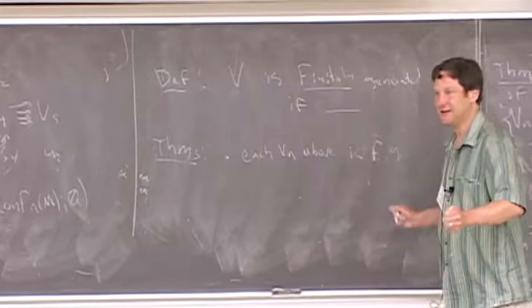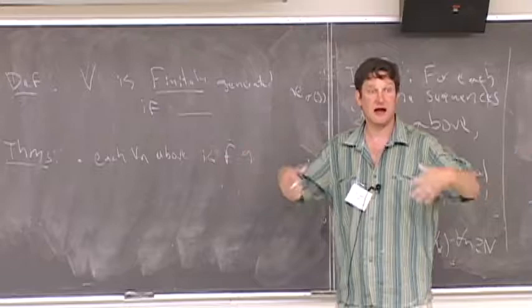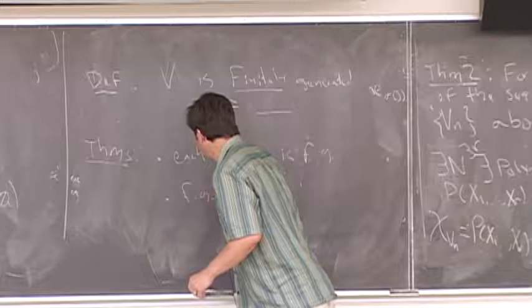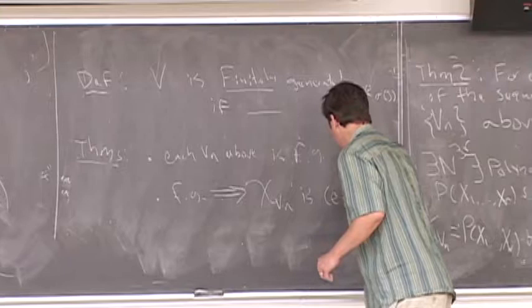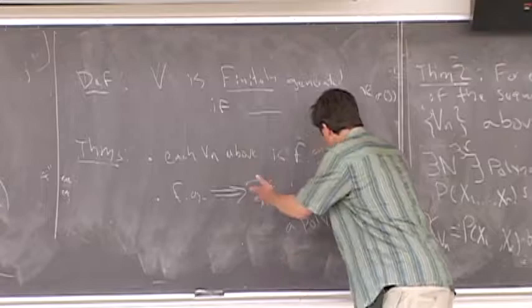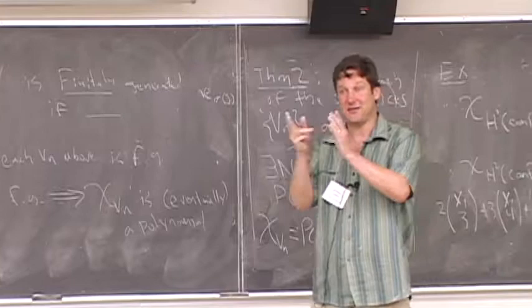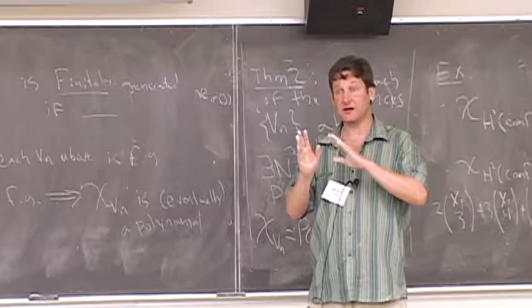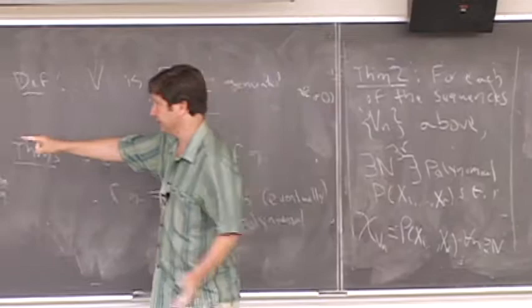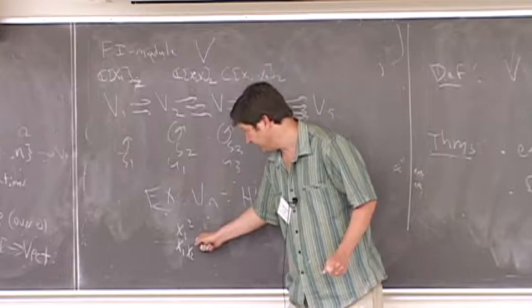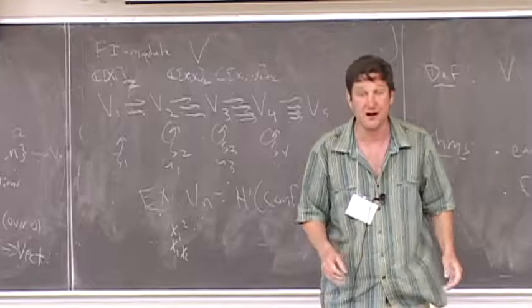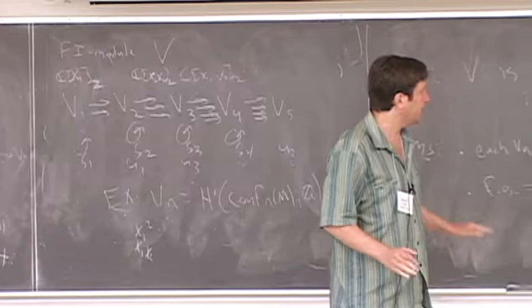Each V_n above — cohomology of configuration spaces, coinvariant algebras, etc. — is a finitely generated FI-module. And finitely generated implies the character of V_n is eventually a polynomial (a character polynomial) for n large enough. We were able to prove theorems about algebraic geometry and algebraic combinatorics without knowing those subjects, just by seeing that you have this FI-module structure and using other people's methods to prove finite generation. The whole paper is about developing methods to prove finite generation in different situations.